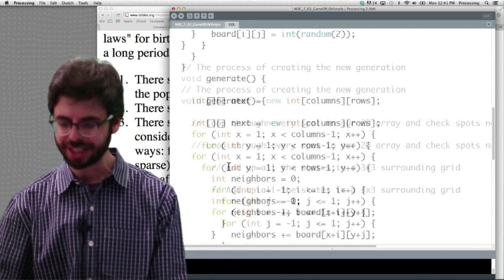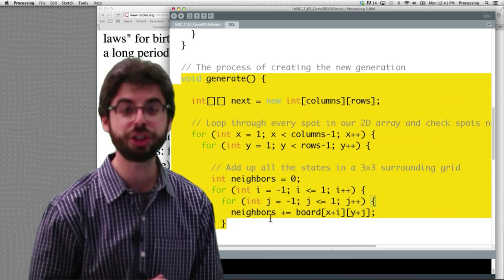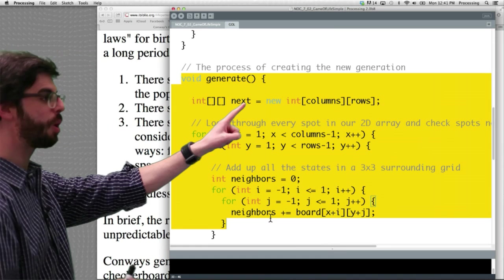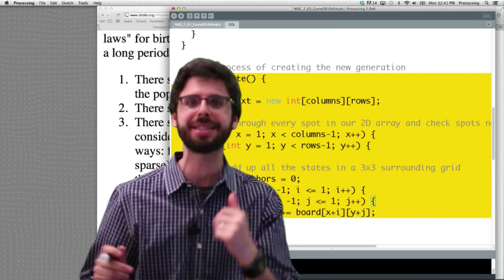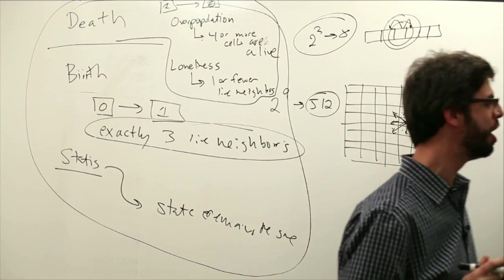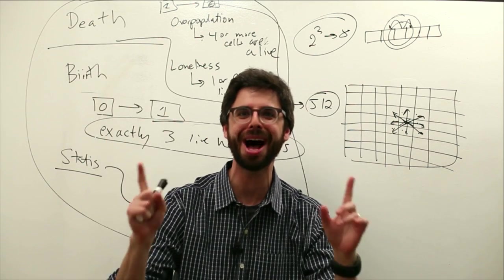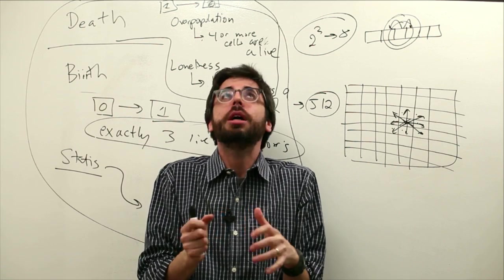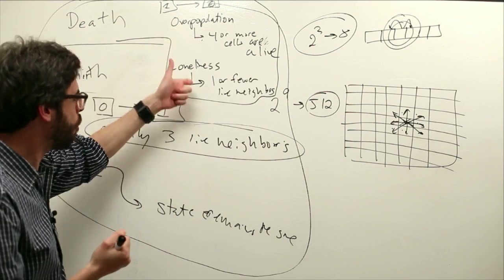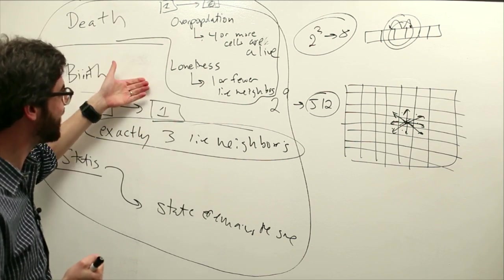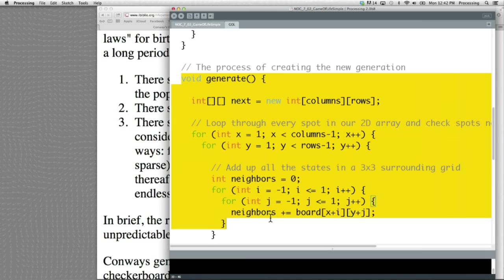Now a couple other things. We have the same idea here where we have a function called generate. The function called generate is where we create the next generation, and we have to compute the states for every single next generation. Now what is the value that we need to calculate? Notice all of these rules require us to know the total number of live neighbors. We need to say, here am I, look around me, at this moment in time, how many neighbors are alive? Are there four, are there one, are there three, are there two? And depending on my state, the combination of my state and the number of live neighbors, this is how we are going to get our results.